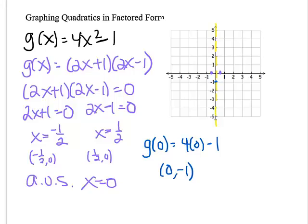If I wanted another pair of points, maybe I'd like to plug in 1 and -1, because I know that those are also going to have the same y value. Let's try g(1). We'll get 4 times 1² minus 1, which is going to give me 3. The point (1, 3) and (-1, 3). And there's my parabola, graphed in factored form.